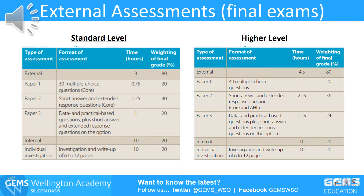Paper 1 and paper 2 assess 11 topics for standard level students and 21 topics for higher level students. Paper 3 is their option paper, where they study one option unit. The first 15 marks are data response and practical-based skill questions. The IA accounts for the last 20% of the weighting of the final grade.